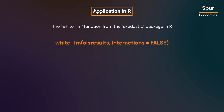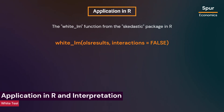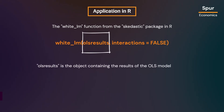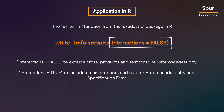To apply the White test in R, we can use the white.lm function from the skedastic package. In this command, white.lm applies the White test and returns its results using the ols_results object containing the OLS model. The function automatically picks up the saved residuals from the model and applies the White test.